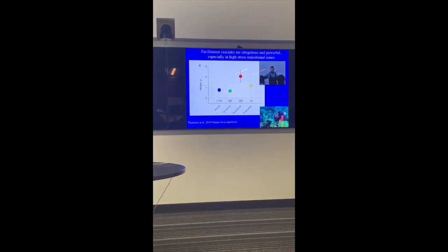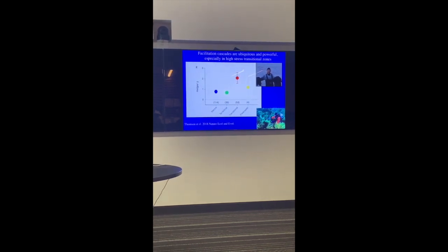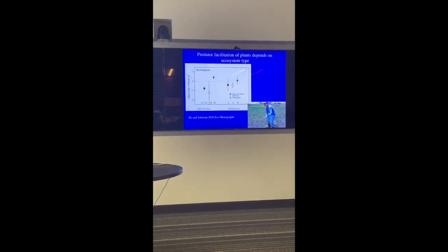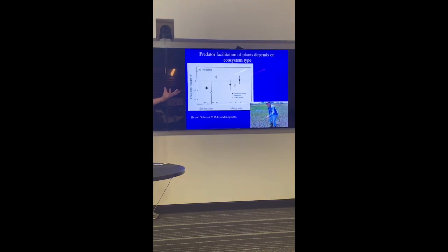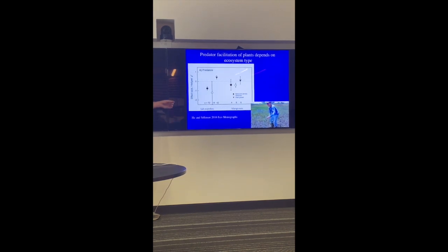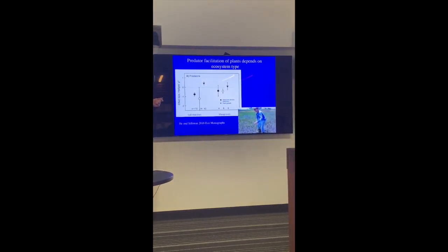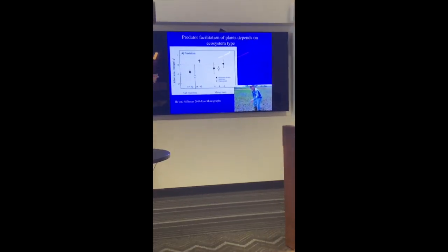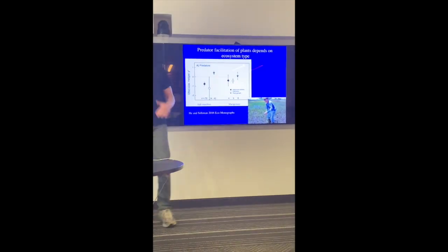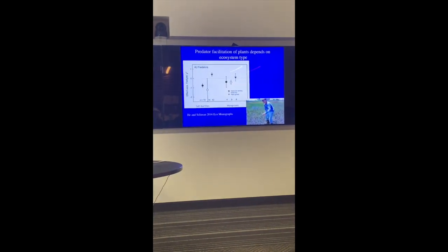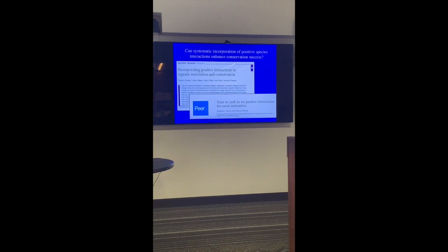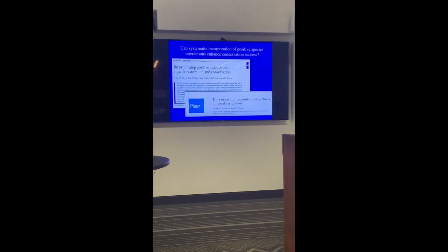We found that this is common throughout all ecosystems. You can find examples. It's something we could potentially take advantage of more in conservation or restoration. We found that it was more important and had a stronger effect on biodiversity in more stressful transitional systems. There was a big effect of these facilitation cascades on biodiversity. If we compared it to the synthesis that have been done on predator facilitation of biodiversity, these effect sizes were larger. We also looked at ecosystem type and the effect of predator facilitation of plants. We found that predators are more likely to facilitate plants indirectly in salt marshes versus mangroves where we saw no effect. If you're restoring salt marshes, you may want to pay more attention to the predators.